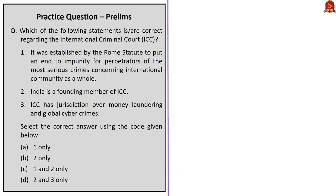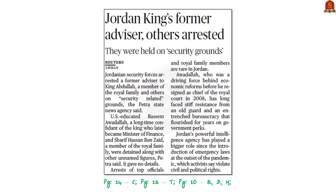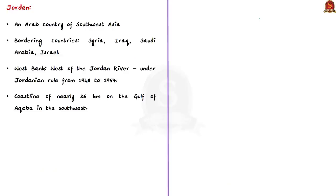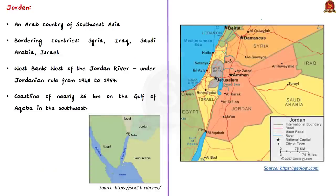In summary for the ICC article: we saw the Rome Statute, the establishment of the ICC, and its jurisdiction. The next article concerns Jordanian security forces arresting a former advisor to King Abdullah on security-related grounds. Jordan is an Arab country in southwest Asia, located in the rocky desert of the northern Arabian Peninsula, bordered by Syria to the north, Iraq to the east, Saudi Arabia to the southeast and south, and Israel and the West Bank to the west.